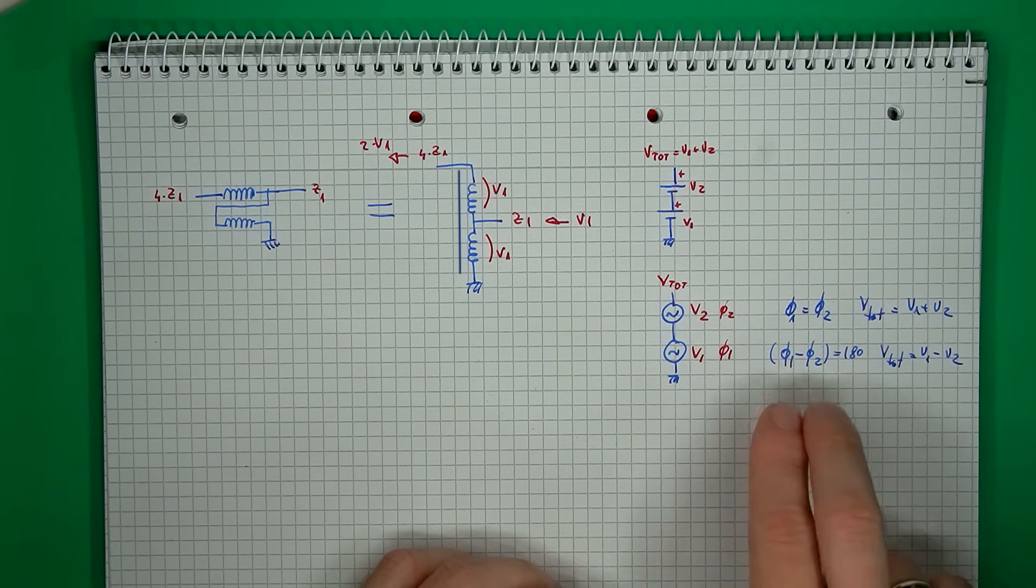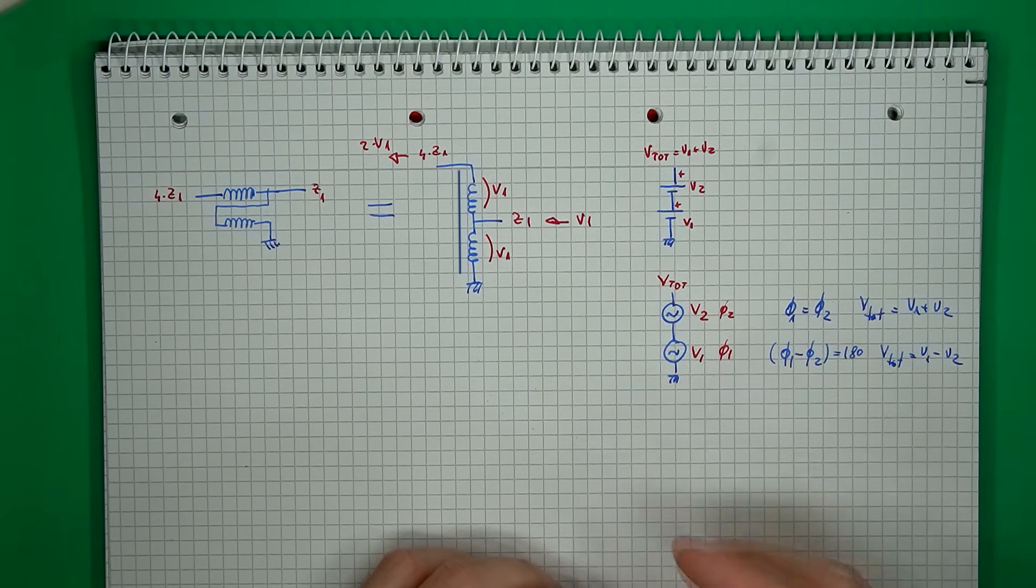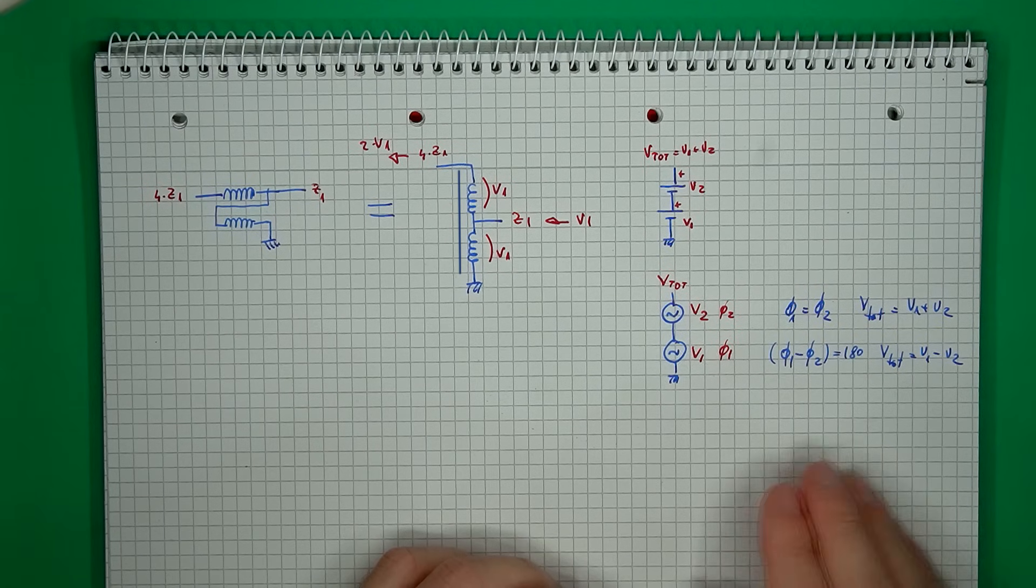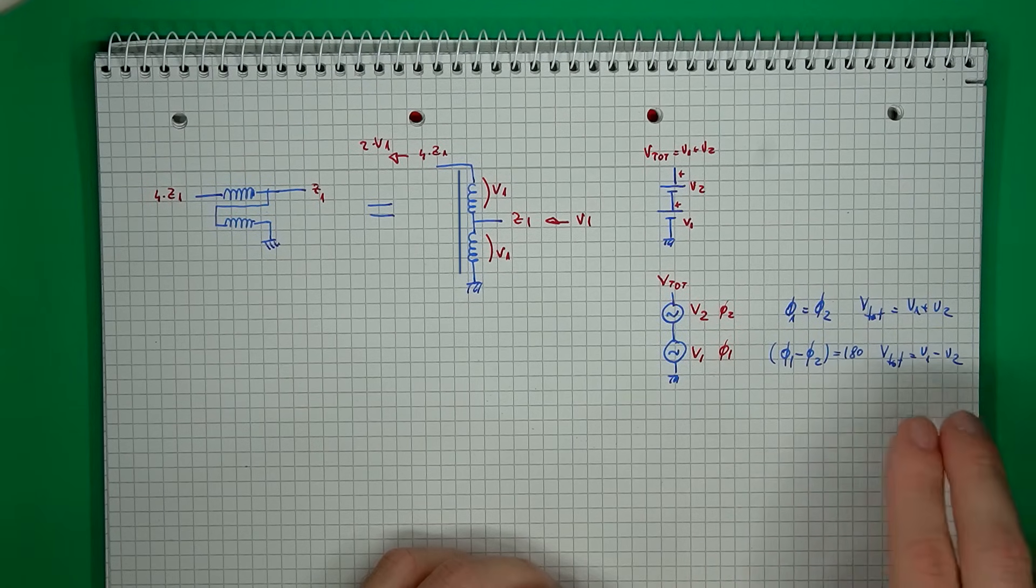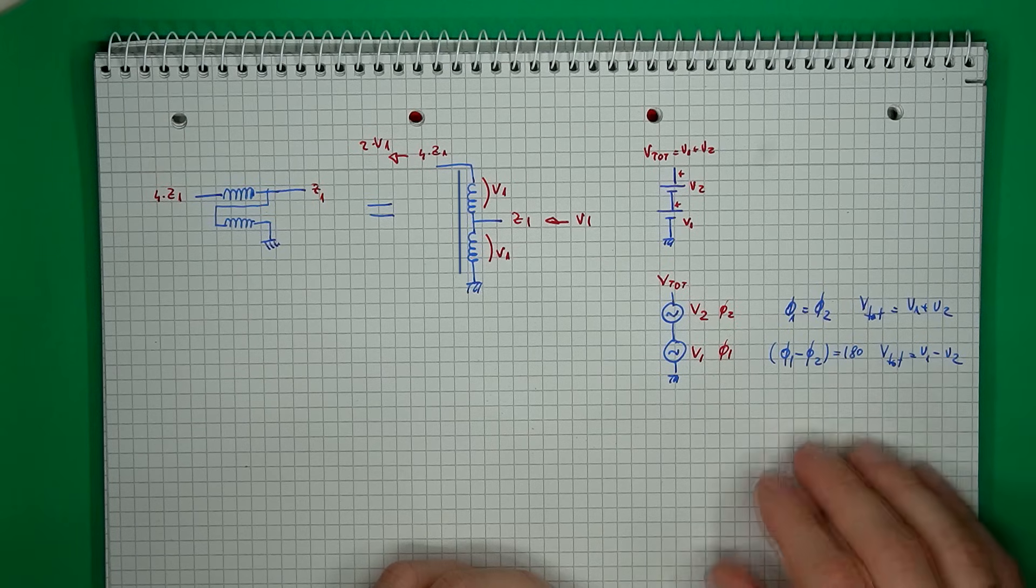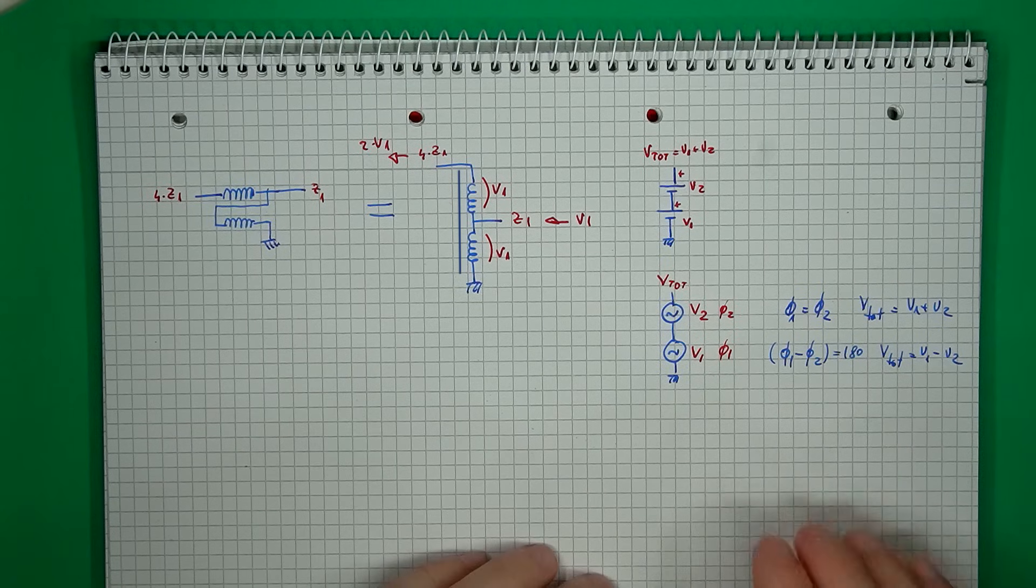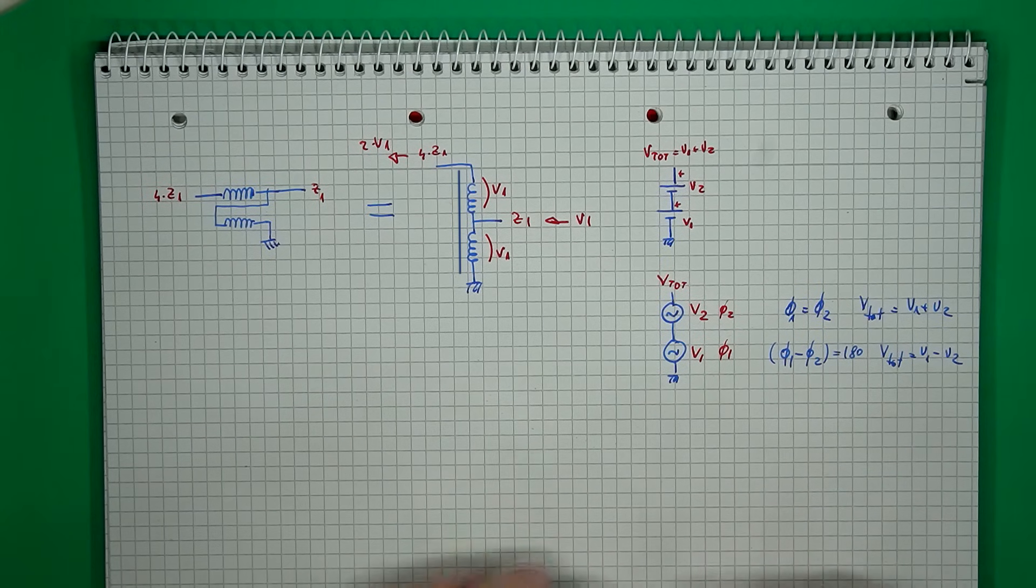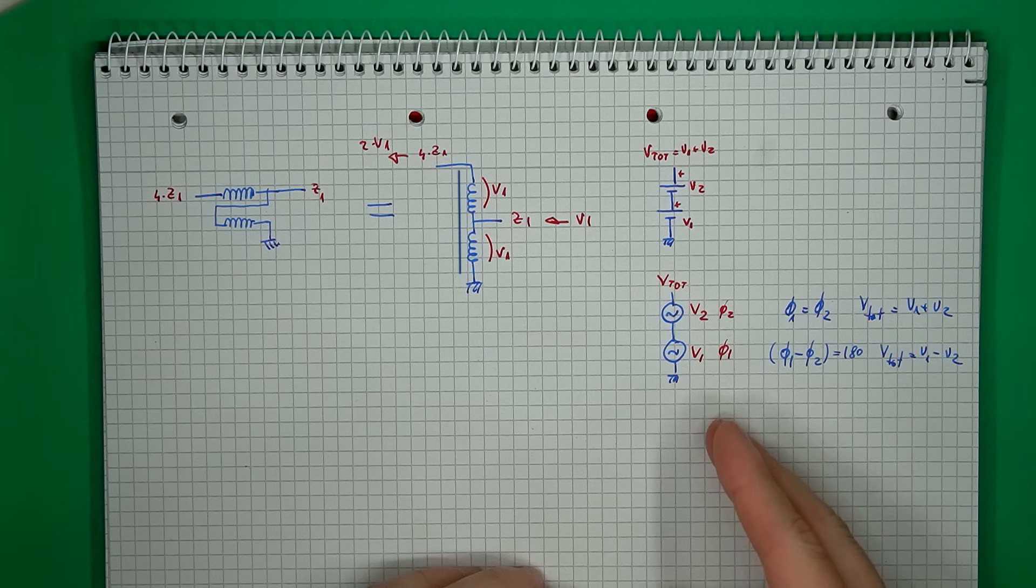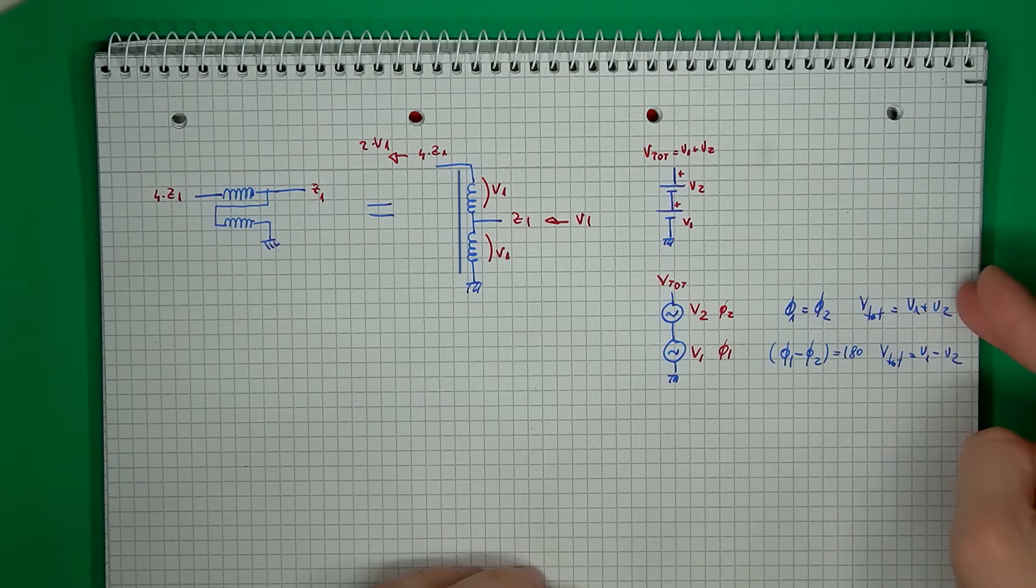With zero degrees of phase shift in between the two signals, so they both have the same phase, the total voltage will be the sum of the two, just like with the DC battery. But in case we have 180 degrees of phase shift in between the two signals, then the total voltage will be the difference of the two. And well, with any sort of angle in between, you will get some other value. Now there is a way to properly calculate this, of course, but the point is that the only way to get the sum of the two voltages is if the phase shift is zero.